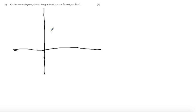So here is an axis for me to work on. And so cos to the minus 1 of x, what I'm going to do is I'm going to consider cos x. I'm just going to sketch it between 0 and pi. So here is 0 and pi.